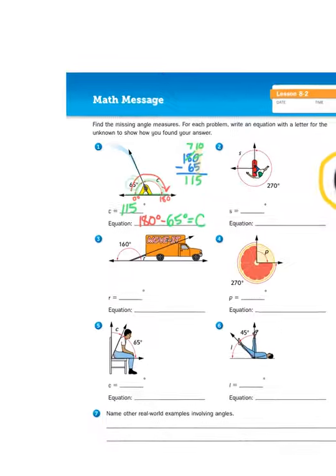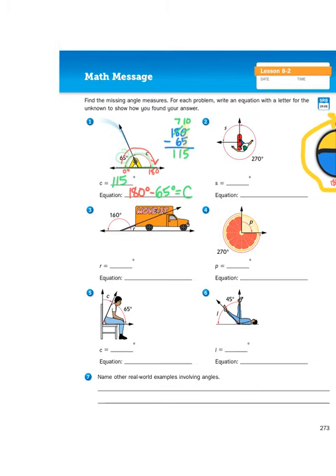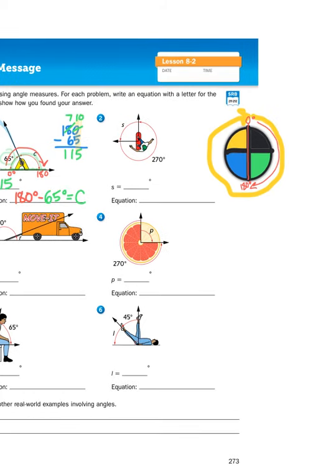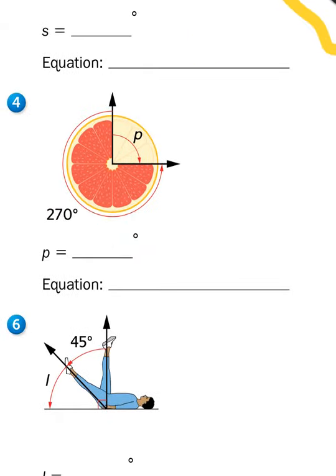Okay, now let's take a look at a different problem. Number four shows us a grapefruit, and it looks like someone ate a portion of the grapefruit, and that left about three-fourths of the grapefruit remaining, just like our circle right here in our example. So I need to create a subtraction problem that is going to help us find the missing measurement.